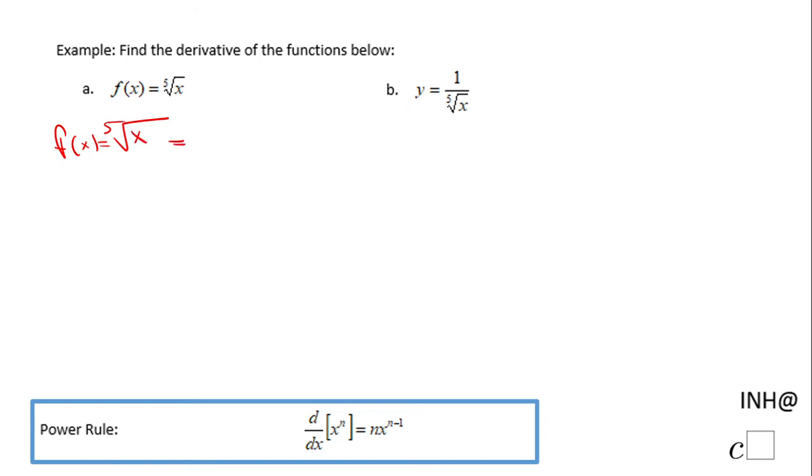This radical form we can change to exponential form: x to the power of 1 over 5. So now we can do the derivative of this function using the power rule, because the derivative will be the derivative with respect to x of x to the power of 1 over 5.